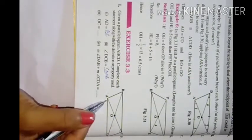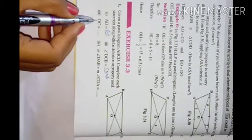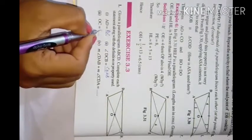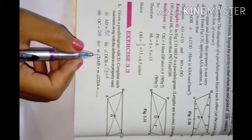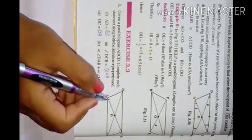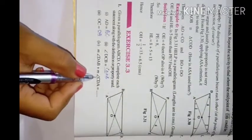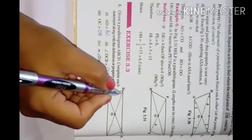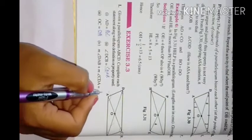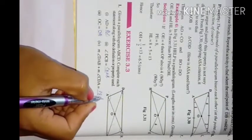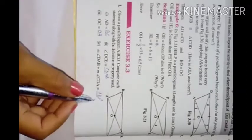OC is equal to OA, and OD is equal to OB since the diagonals bisect each other. Also, measure of angle DAB plus measure of angle CDA equals 180 degrees because the sum of adjacent angles in a parallelogram is 180 degrees.